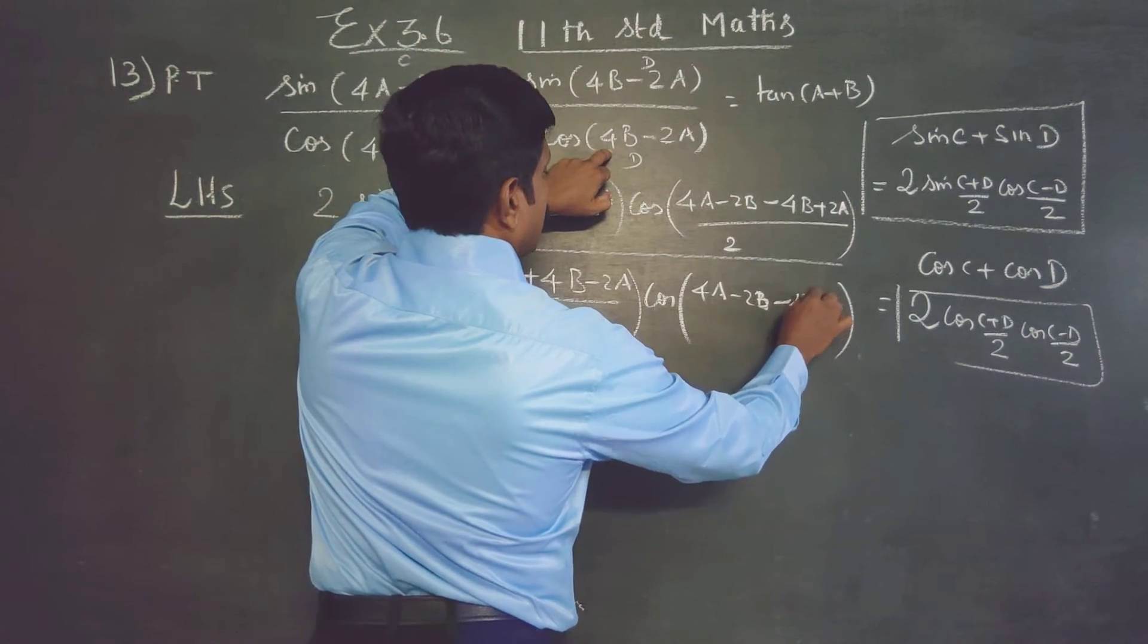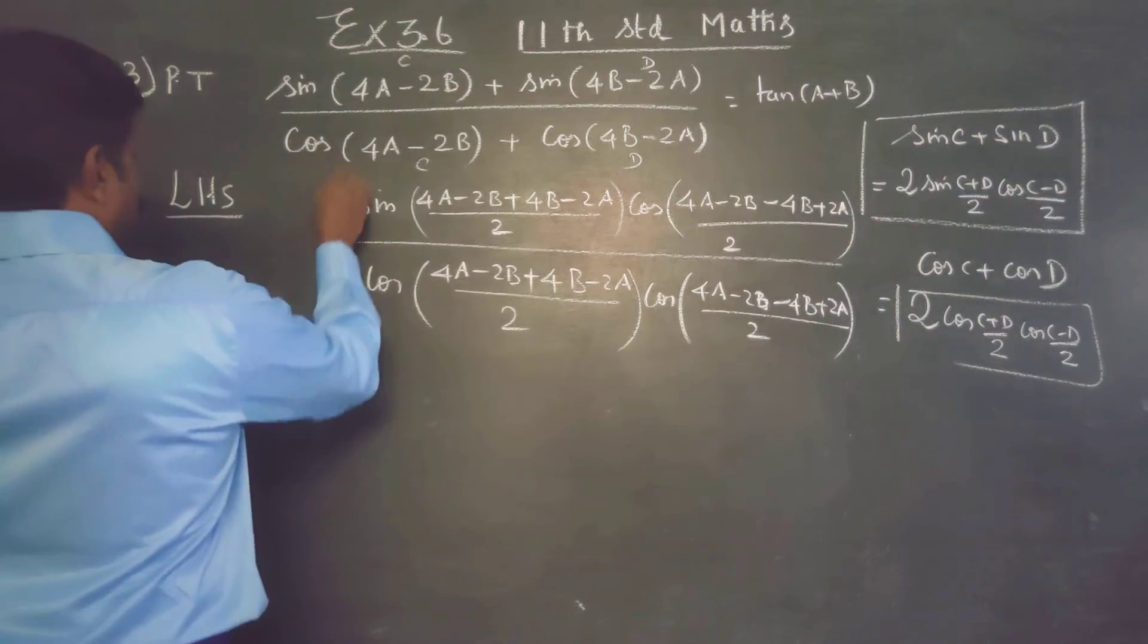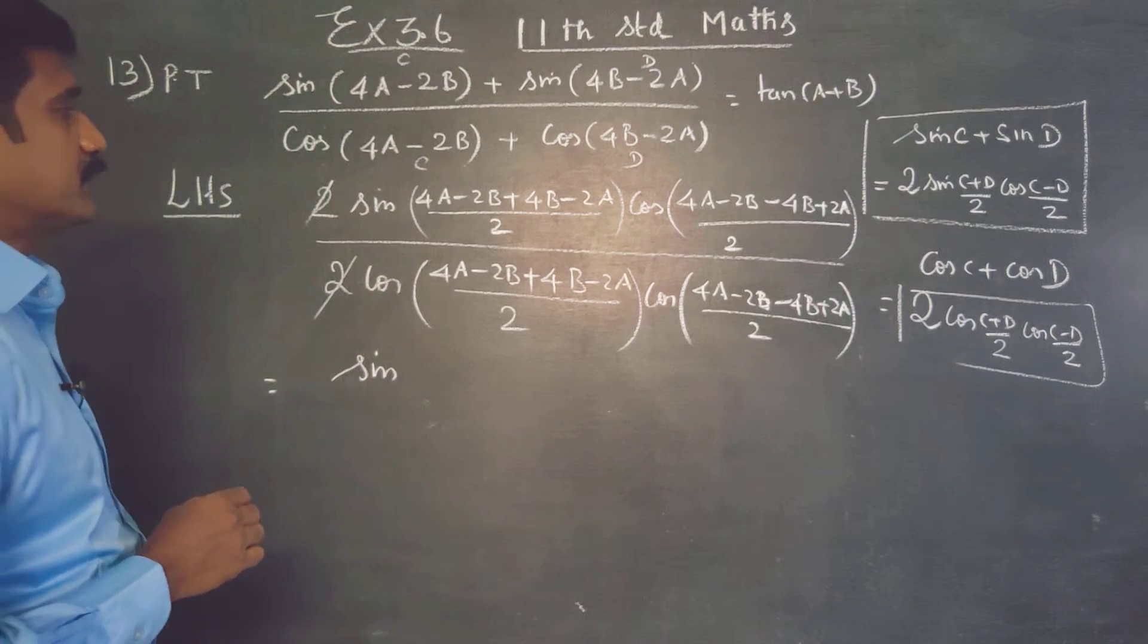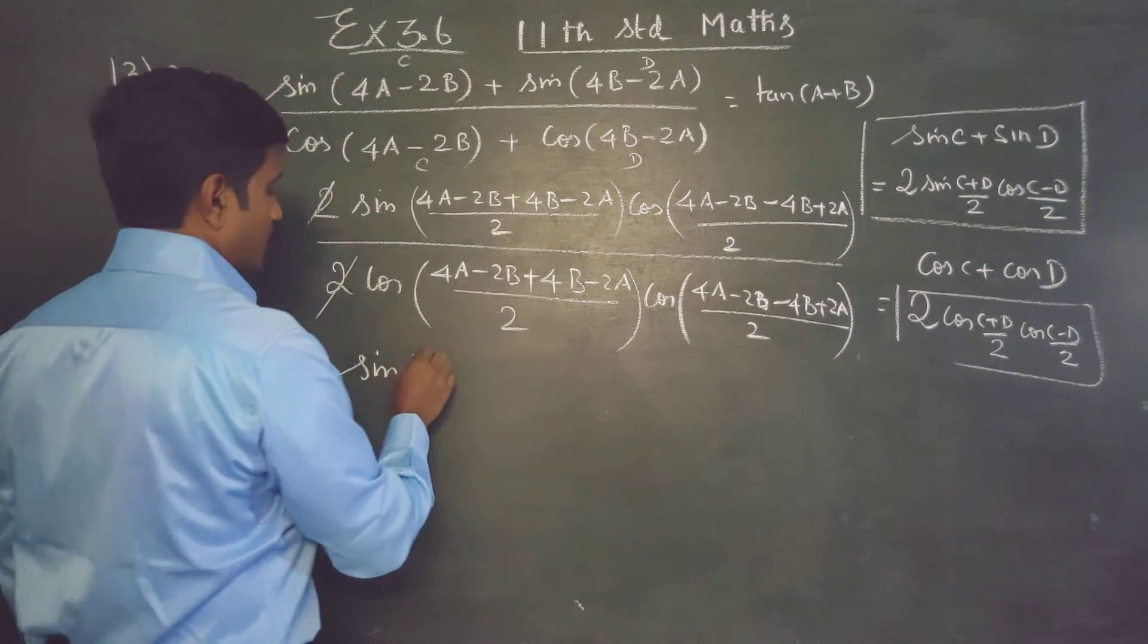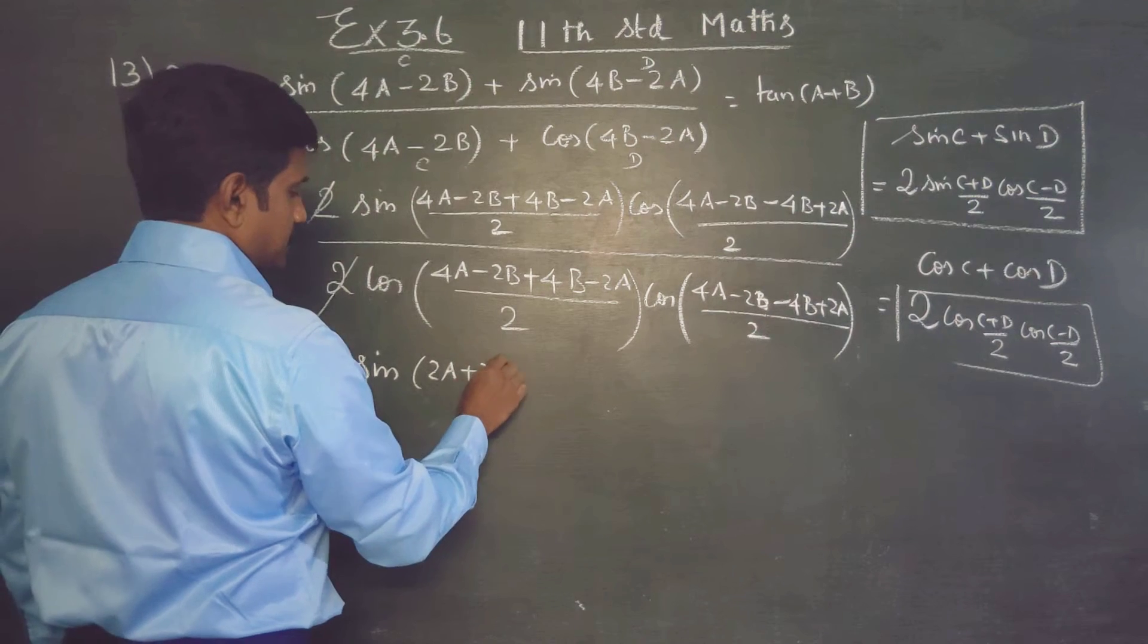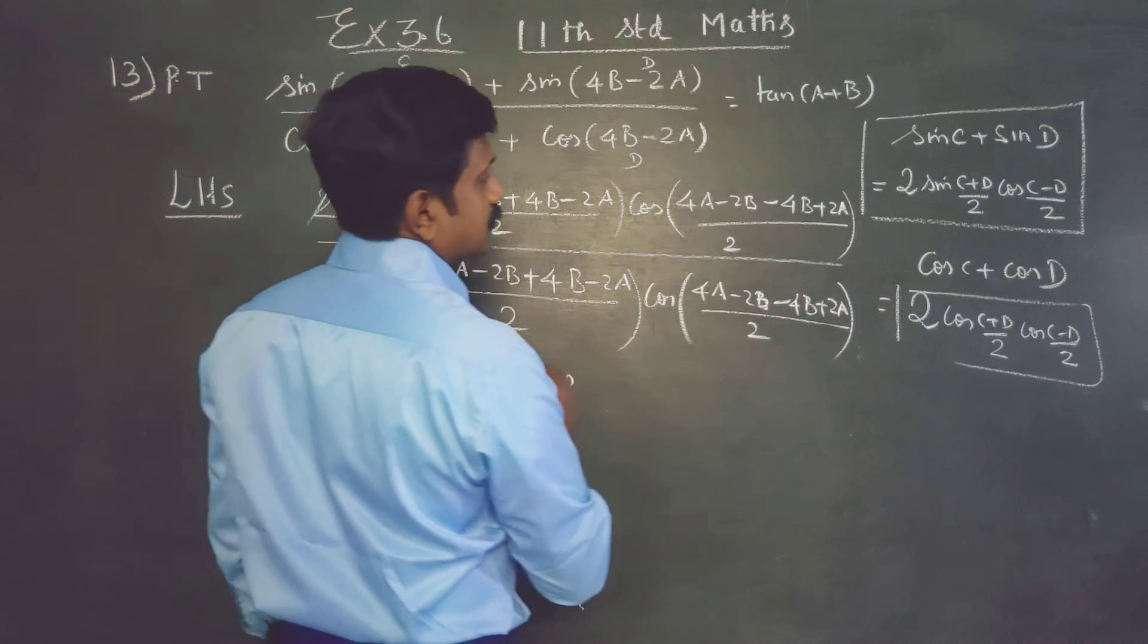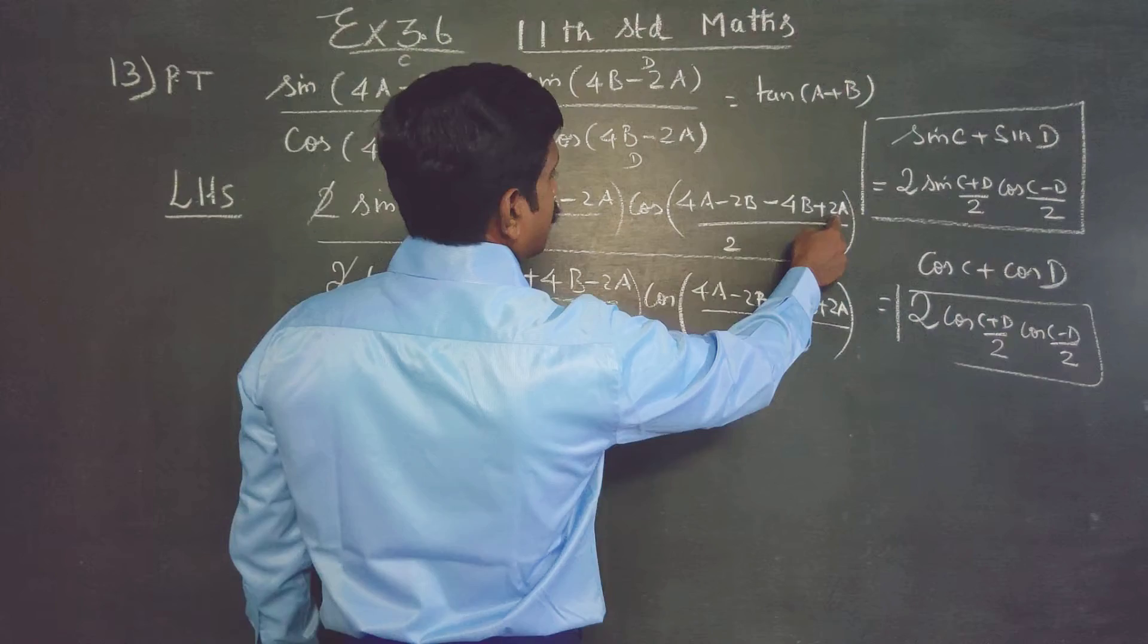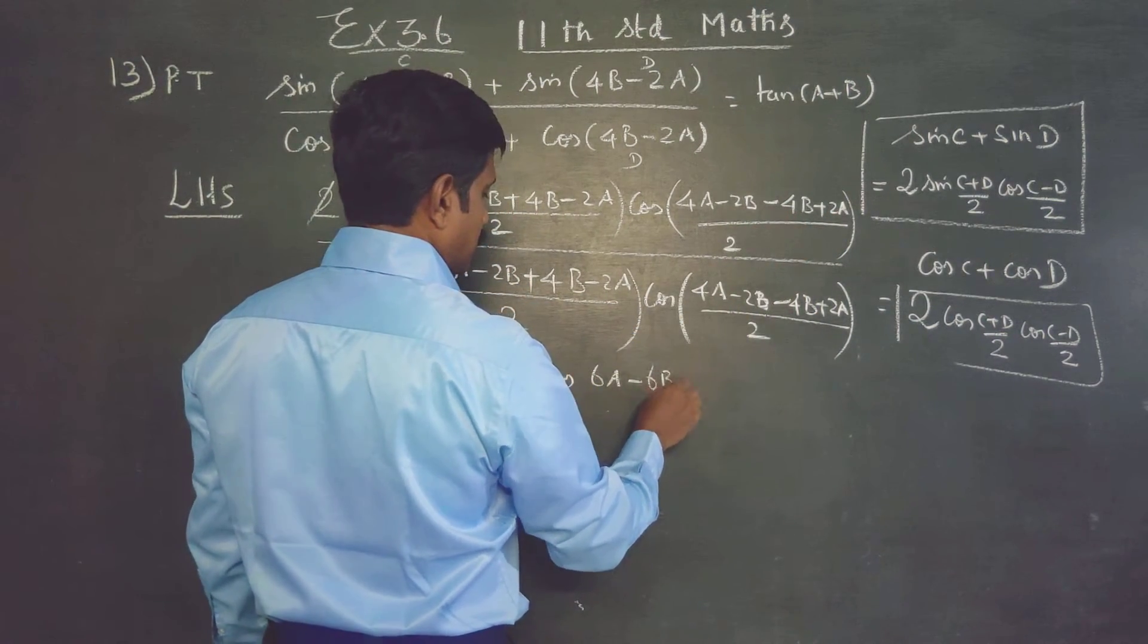The 2 to cancel it, your answer will be sine 4a, 2a, 2a, 2b, 4b plus 2b by 2, cos 4a plus 2a, 4a plus 2a is 6a minus 6b by 2.